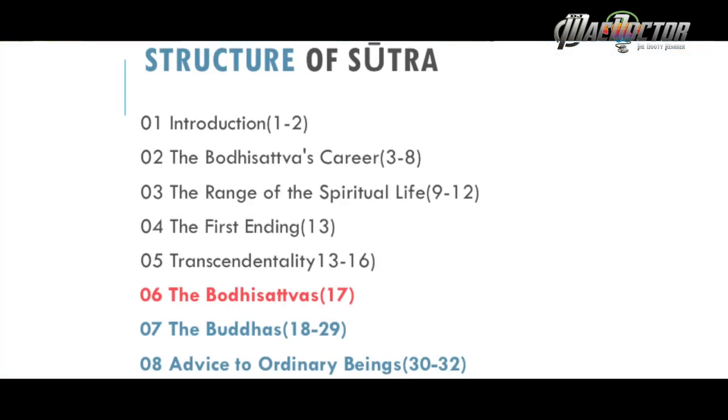Let us continue with the structure of the sutra. Venerable Yu Deng, one month ago, would have covered fascicles 1 to 16 — the first part, which is more aligned with those who have just started on the path: people who have just become a bodhisattva and would like to learn how to live nicely and happily. But chapter 17 is like a recruitment agency wanting the bodhisattva to not only work for themselves, but to bring their mind to all sentient beings. And from chapter 18 to 29, it's all about how to perfect the path of the bodhisattva so one day you can arrive at Buddhahood.